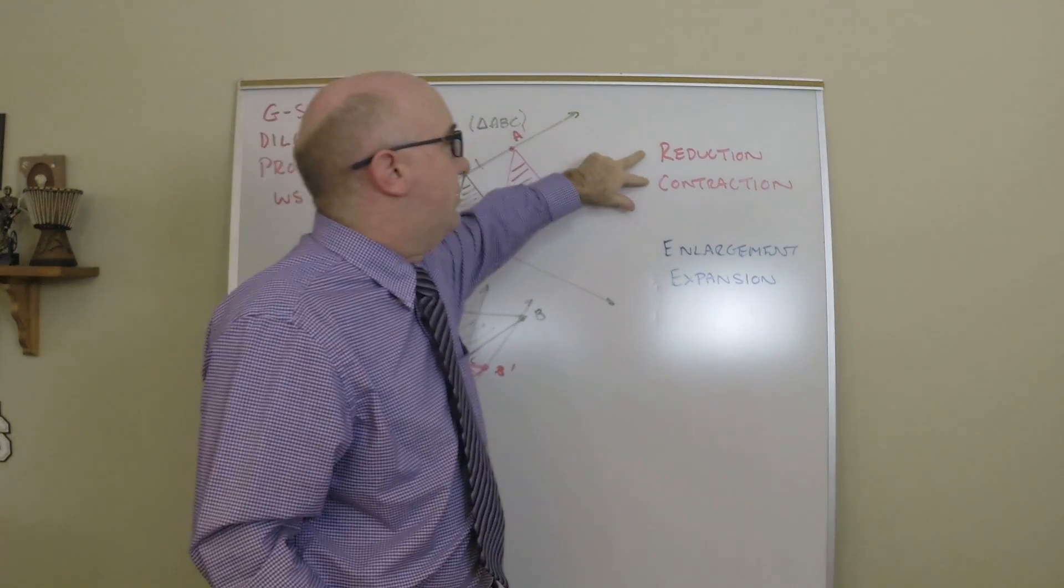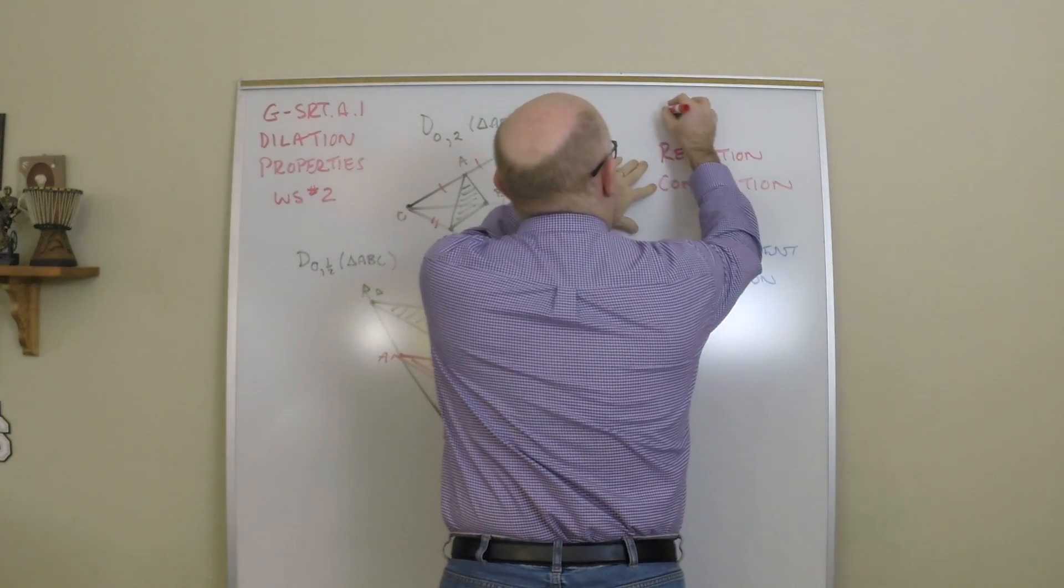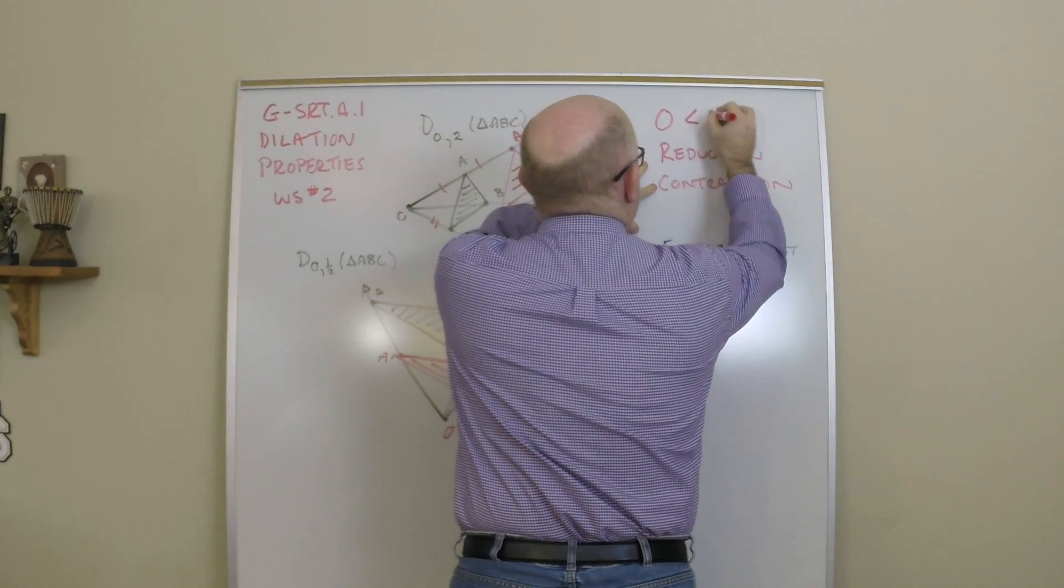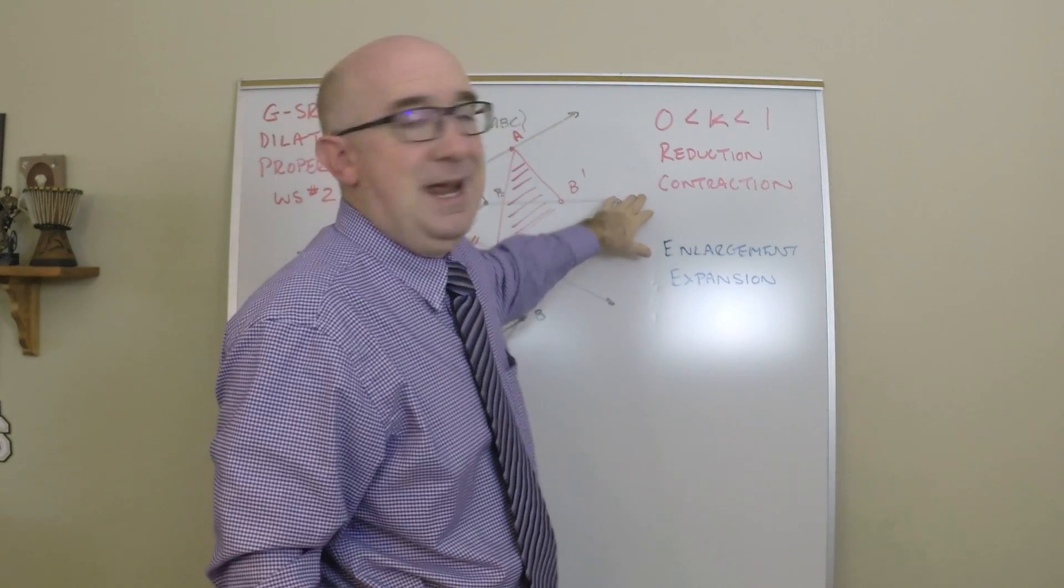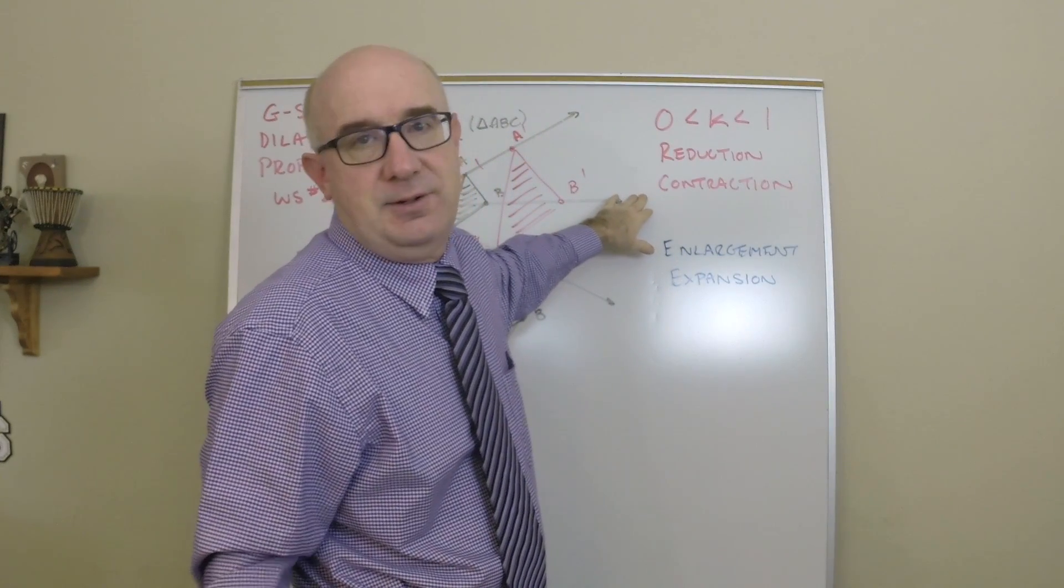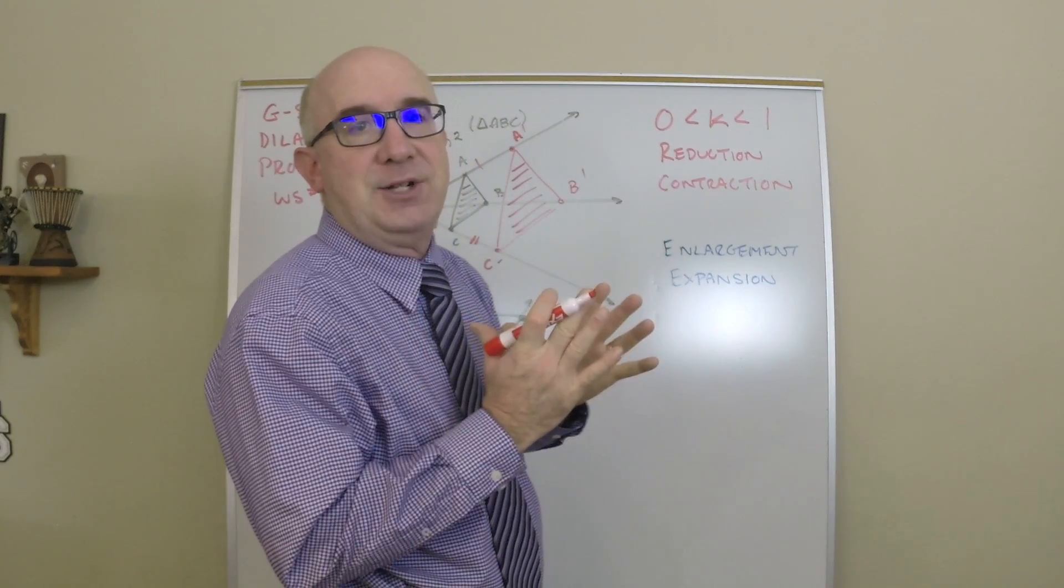Words that get used, there's a lot of different words that get used. But when your k factor is between 0 and 1, when k, and k is usually the scale factor variable, it's a reduction or sometimes called a contraction,